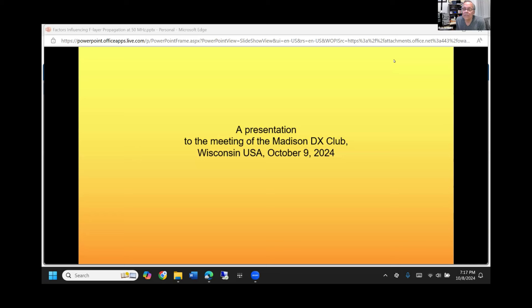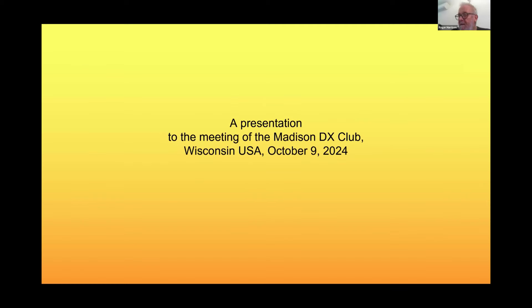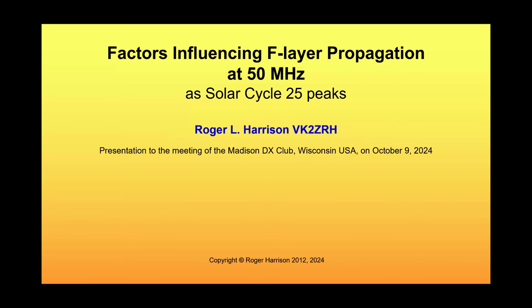Roger started out years ago working down in Antarctica studying aurora. He's been a communications engineer for many years and is quite active in clubs and publications in Australia — he's the editor of a couple of publications currently. He's also worked for the Australian Space Weather Bureau, so he's very well qualified to give us this talk: 'Factors Influencing F2 Flare as Solar Cycle 25 Peaks.'